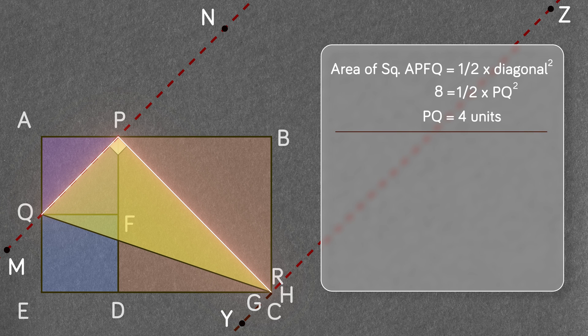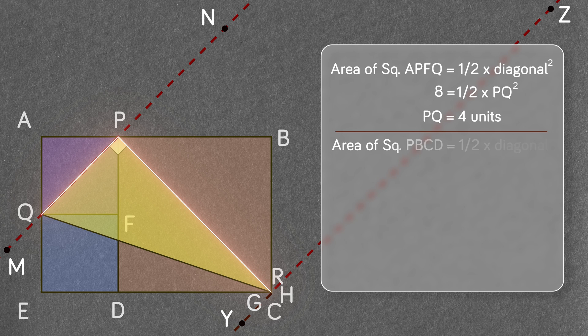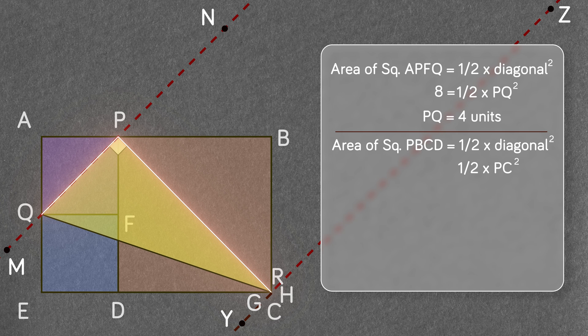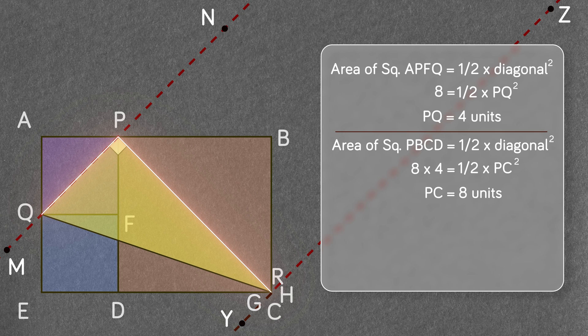To find out PR, let's look at square PBCD. Because the area of this square PBCD will be 4 times the area of the square APFQ, half diagonal PQ square will be equal to 8 times 4 equals to 32 square units or the diagonal PC will be equal to root 64 equals to 8 units.